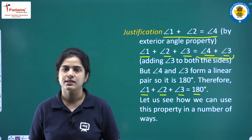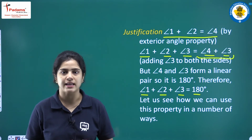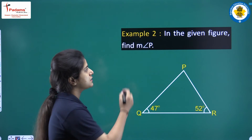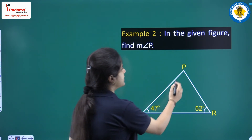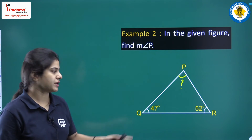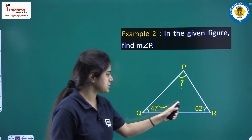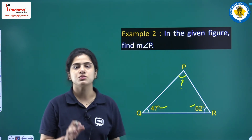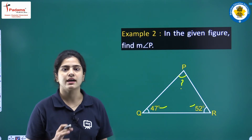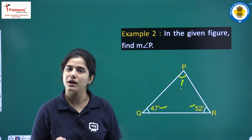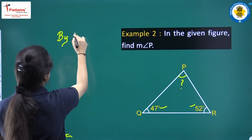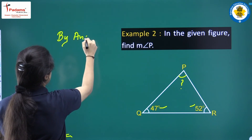Now let's see how we can use this property. Based on this example: in the given figure, find the measure of angle P. We know the other two angles. By the angle sum property, the sum of all angles of a triangle equals 180 degrees.